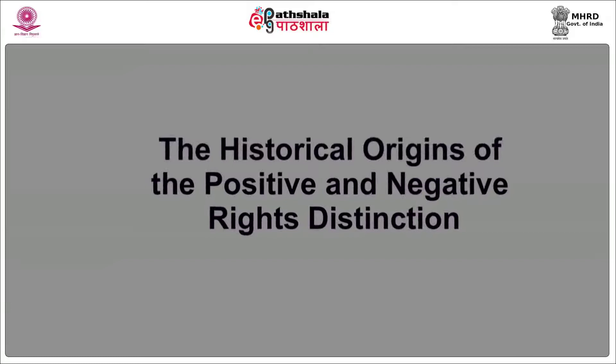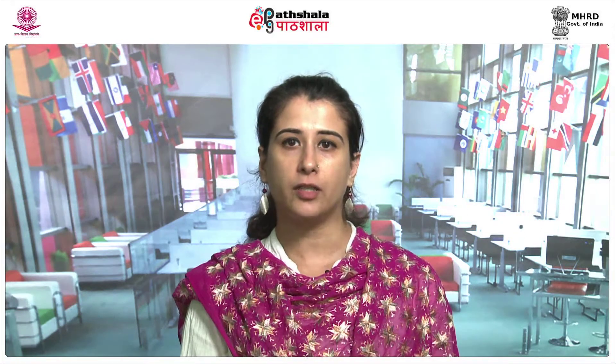The first part of the module is titled The Historical Origins of the Positive and Negative Rights Distinction. The distinction between positive and negative rights dates back at least to the great philosopher Isaiah Berlin. In an influential lecture titled Two Concepts of Liberty, delivered at the University of Oxford in 1958, Berlin famously distinguished between positive and negative liberty. This lecture was later published in 1969 in a volume entitled Four Essays on Liberty.